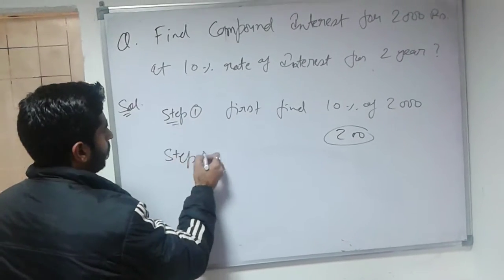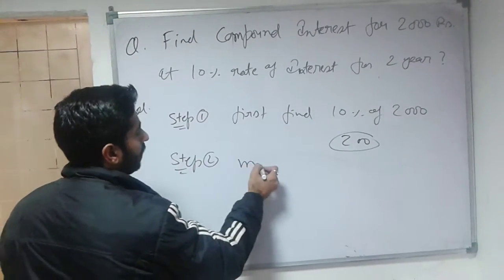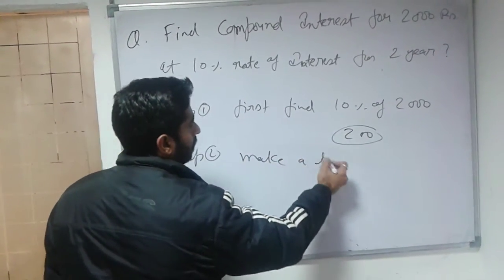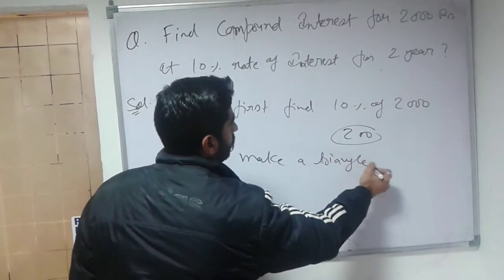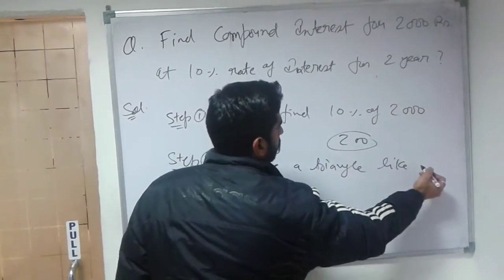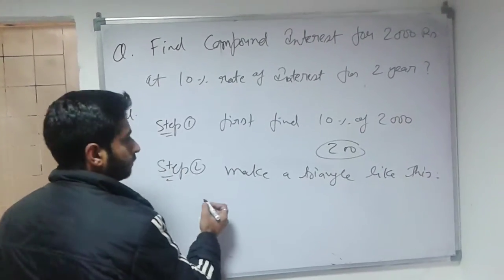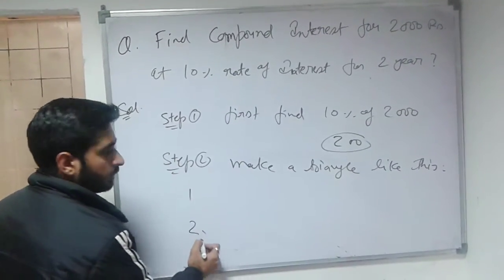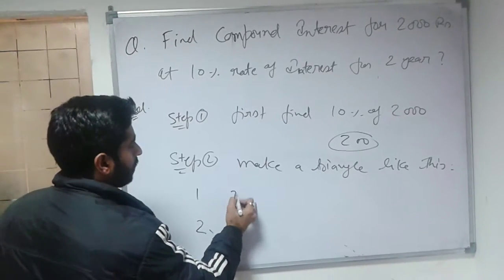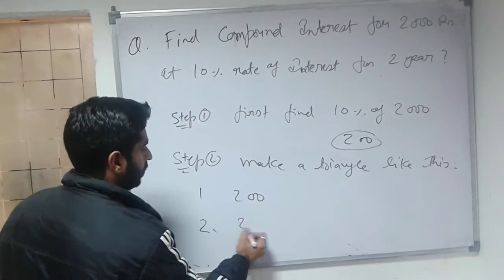Step 2 is make a triangle like this. First year, second year, write down 200, write down 200.